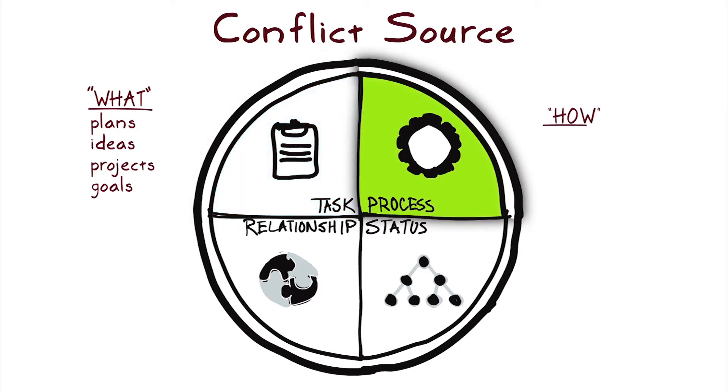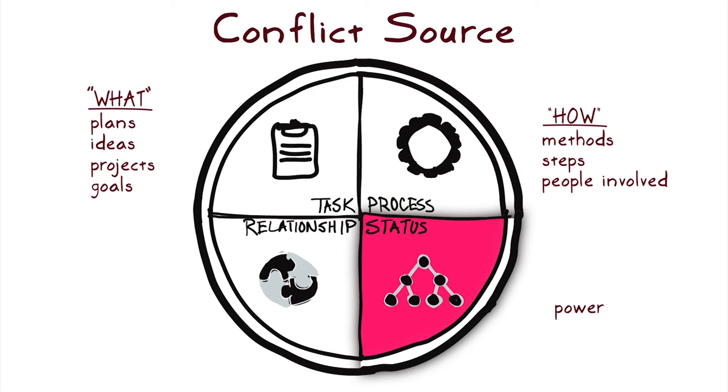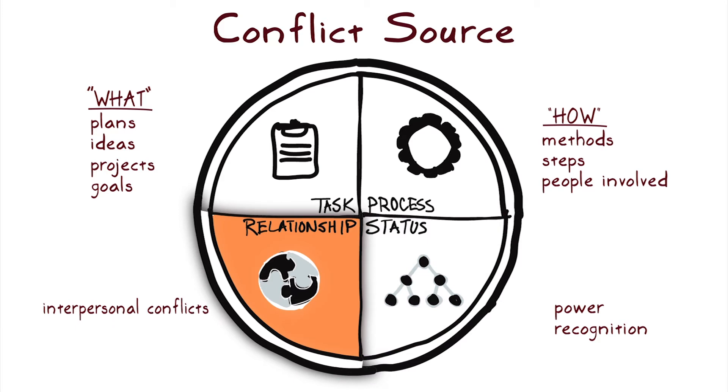Process, or how to get the work done, including methods for making decisions and the steps and people involved. Status: disagreement about who is in charge or deserves credit for the work. Or relationship, which is interpersonal conflict involving anger and hurt feelings.